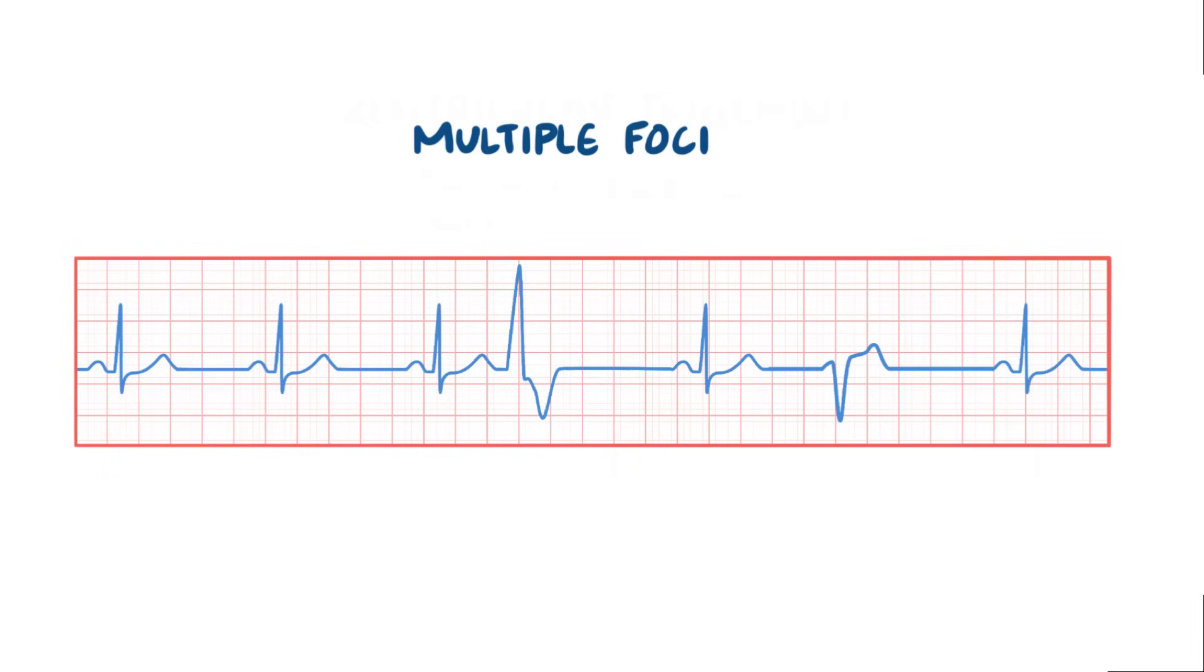Also, you might have multiple ectopic foci firing off PVCs, which end up producing different appearing QRS complexes on a single rhythm strip.